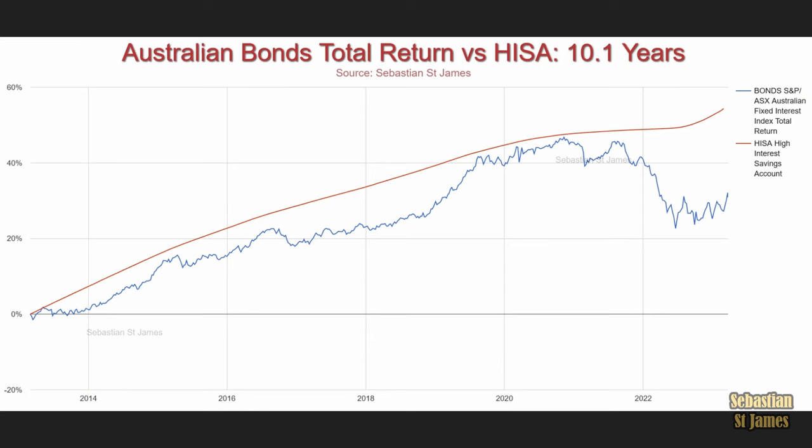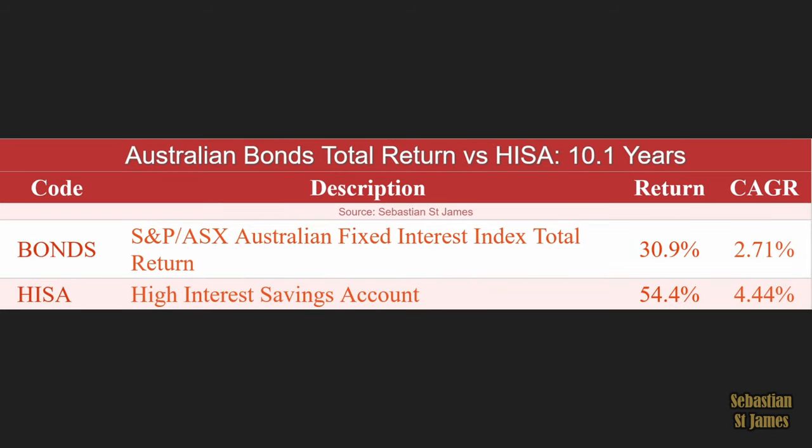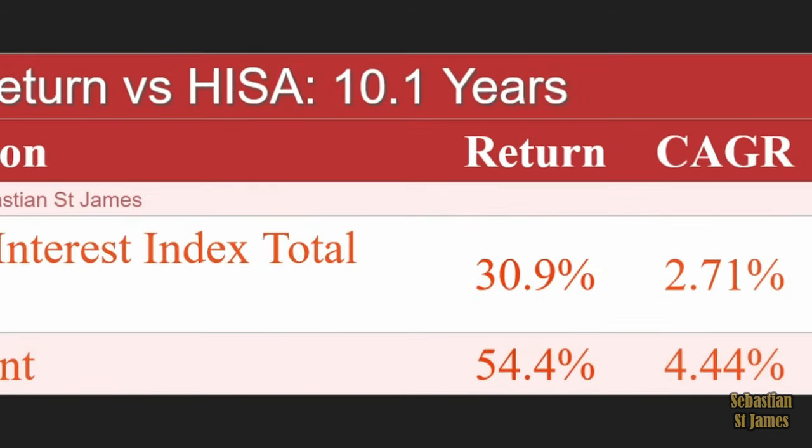Over 10.1 years, bonds returned 30.9% and the bank returned 54.4% — a big difference. Bonds has a CAGR of 2.71%; cash has returned 4.44% compound annual growth rate. I'm limited to 10.1 years of data from this particular index.